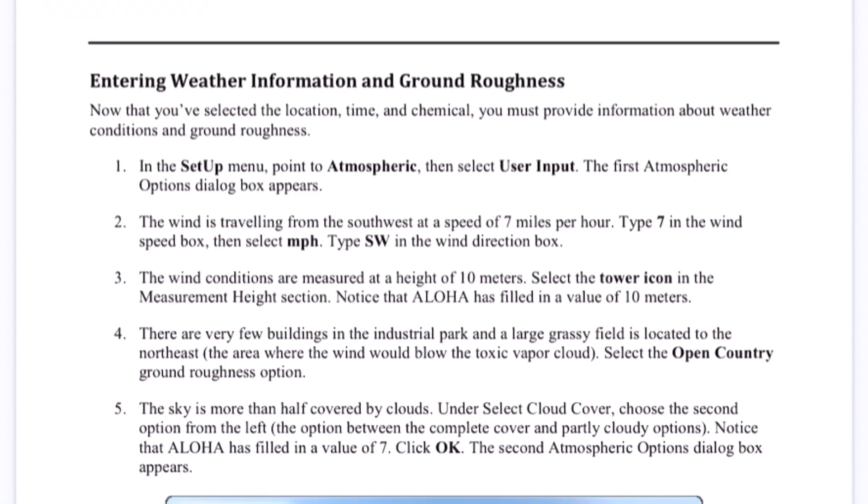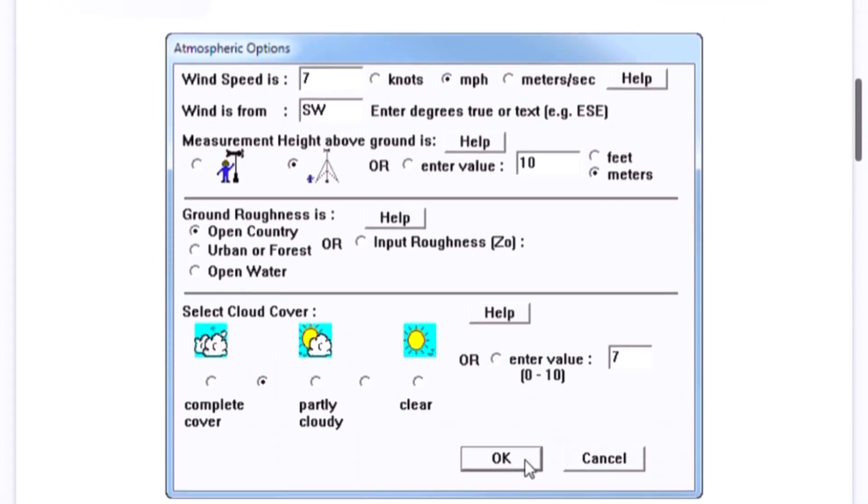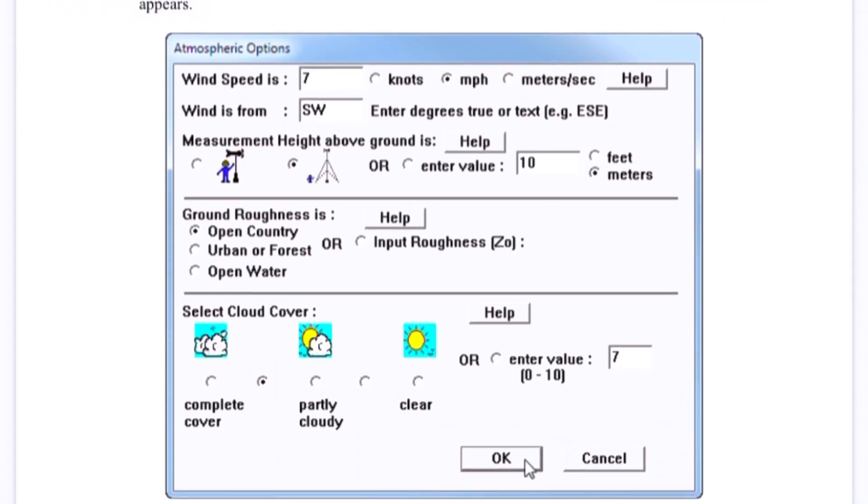Then enter the weather conditions of the area where the facility is. So here we can put the weather conditions of our own area. It includes wind speed, the wind direction, the weather - cloudy, partially cloudy, or it's clear.